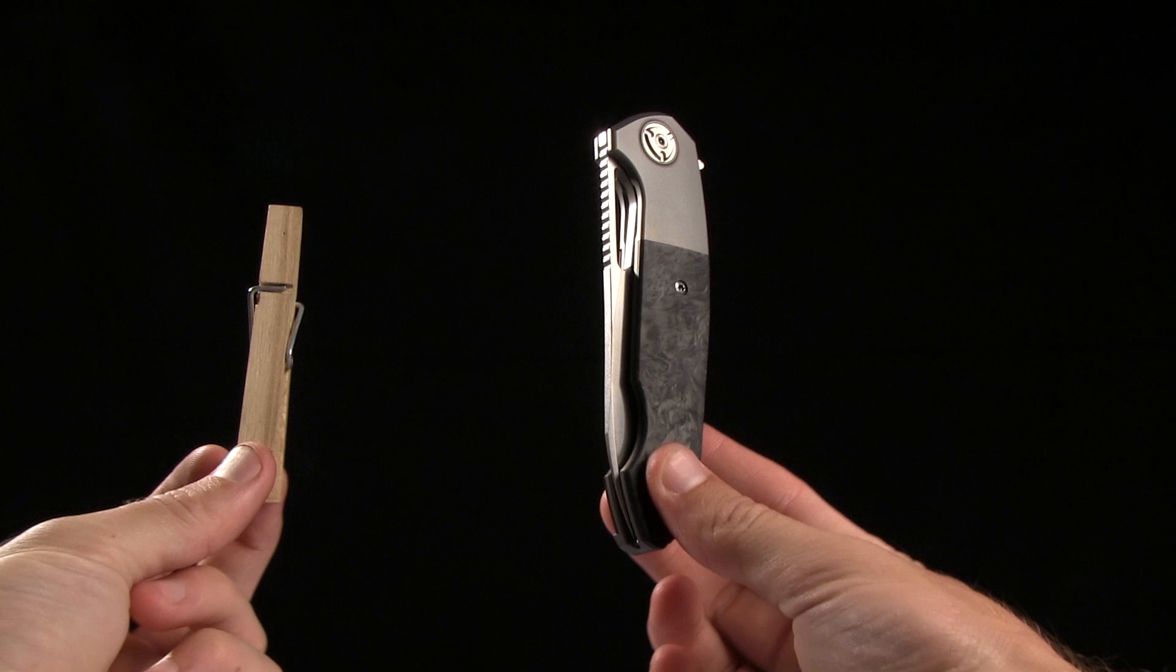Weight is 4.51 ounces, and here's your tactical clothespin 4 size comparison.